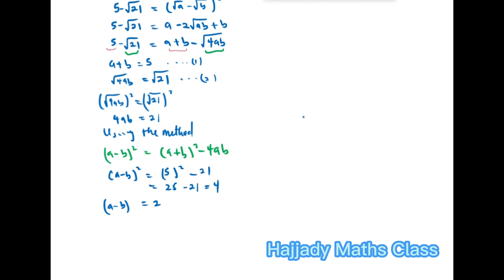So A - B by taking square root of both sides is going to be 2. So we have a new equation. Let me just call that equation 3, which is A - B = 2. And combining this with our equation 1, which is A + B = 5.